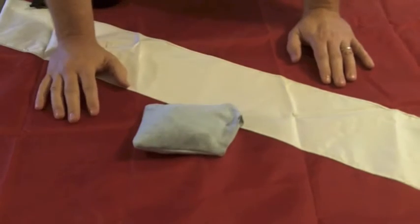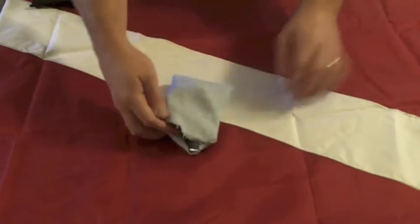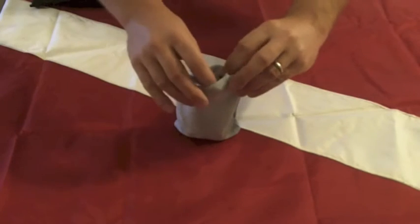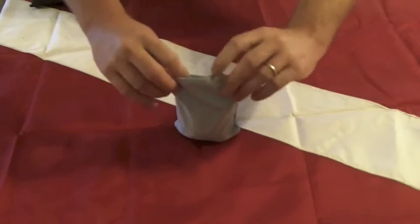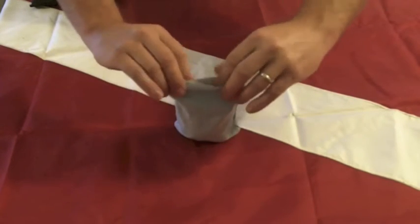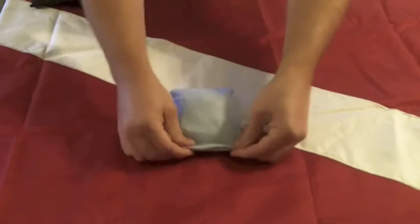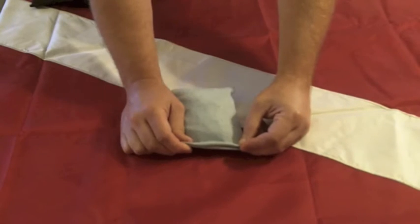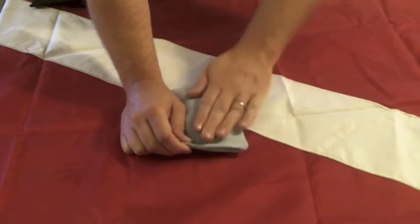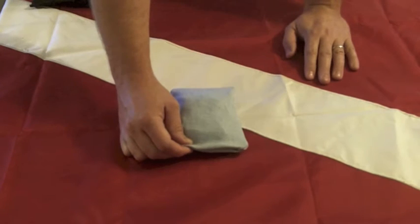What that's going to help you with is when you go to sew this up. If I've got a sewing machine, now I can lay this right on the sewing machine. I've got no worries about the lead shot coming out of the pocket there. Once it's all sewn up, we'll go from there.